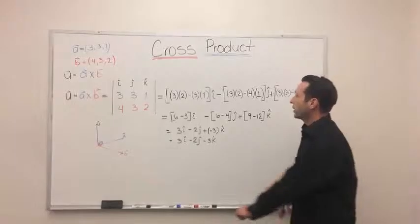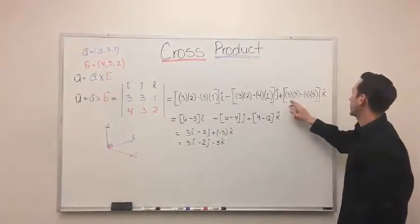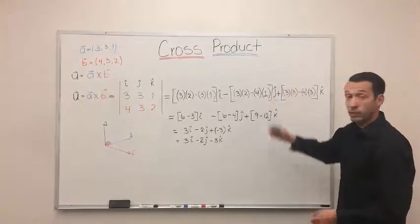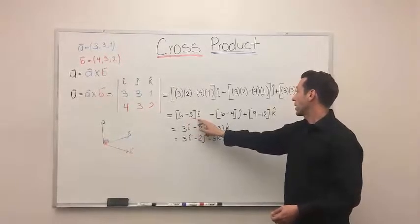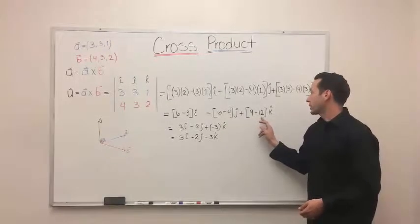And then lastly, leaving off the K portion. We get the K component, which is 3 times 3, minus 4 times 3. If you do the numbers, it's 6 minus 3 I, minus 6 minus 4 J, plus 9 minus 12 K.